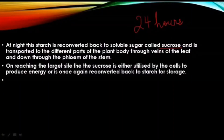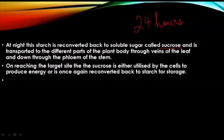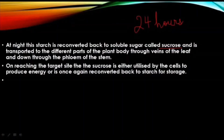At night there is no sun, so no photosynthesis and no synthesis of glucose. Whatever stored starch is present in the plant body is reconverted back into soluble sugar called sucrose. This sucrose is then transported to every cell of the plant body through the veins of the leaf and through the phloem of the stem, all the way to the roots. At the target site, the sugar is either utilized by the cells to produce energy or reconverted back to starch.